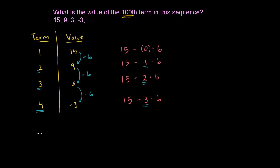So if we had the nth term, what's this going to be? It's going to be 15 minus n minus 1 times 6. When n is 4, n minus 1 is 3. When n is 3, n minus 1 is 2. When n is 2, n minus 1 is 1. When n is 1, n minus 1 is 0. So this term right here is n minus 1. So minus (n minus 1) times 6.